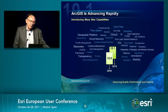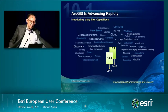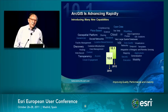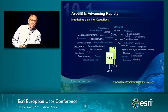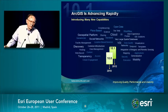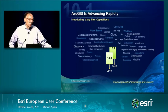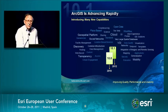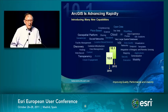ArcGIS in general — in the desktop, in the server, in the web — is advancing rapidly. The way that we implement our technology is through releases. Release 10.0 is the current release. Release 10.1 is coming out sometime in the first quarter of next year. This has literally thousands of small and, in some cases, big improvements associated with it.